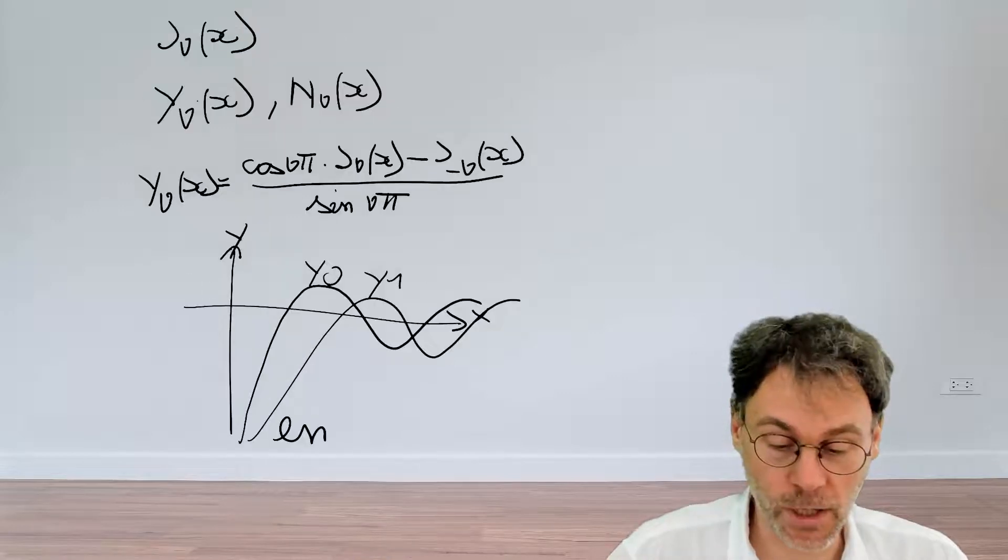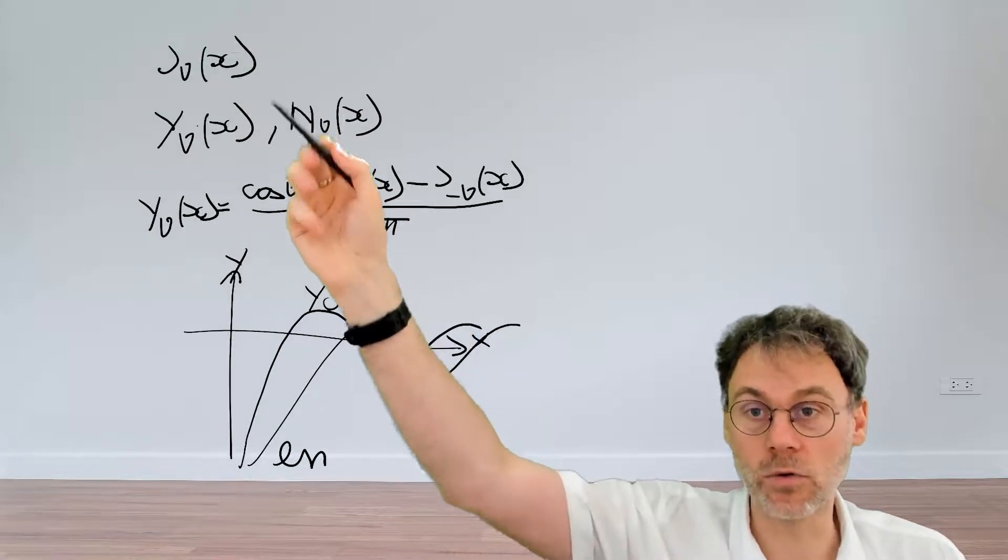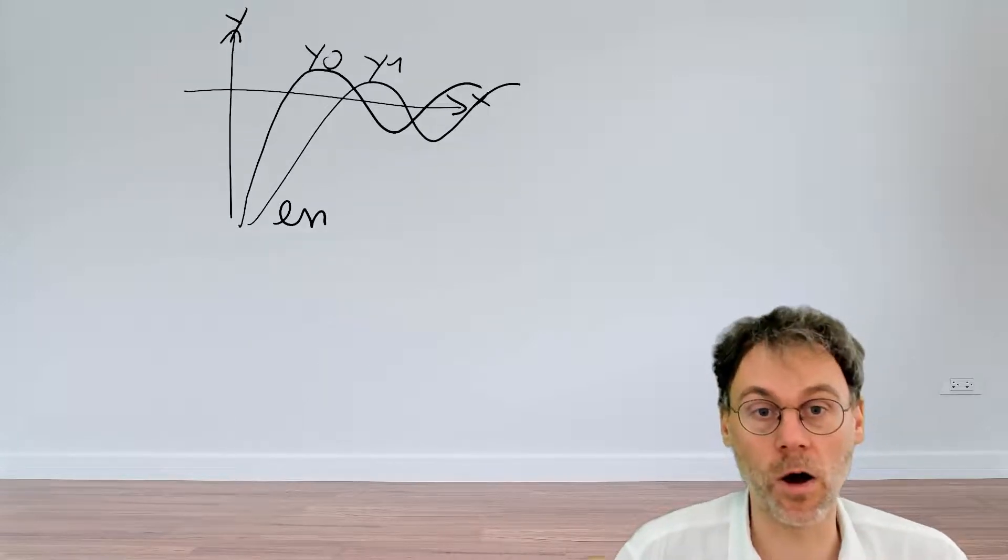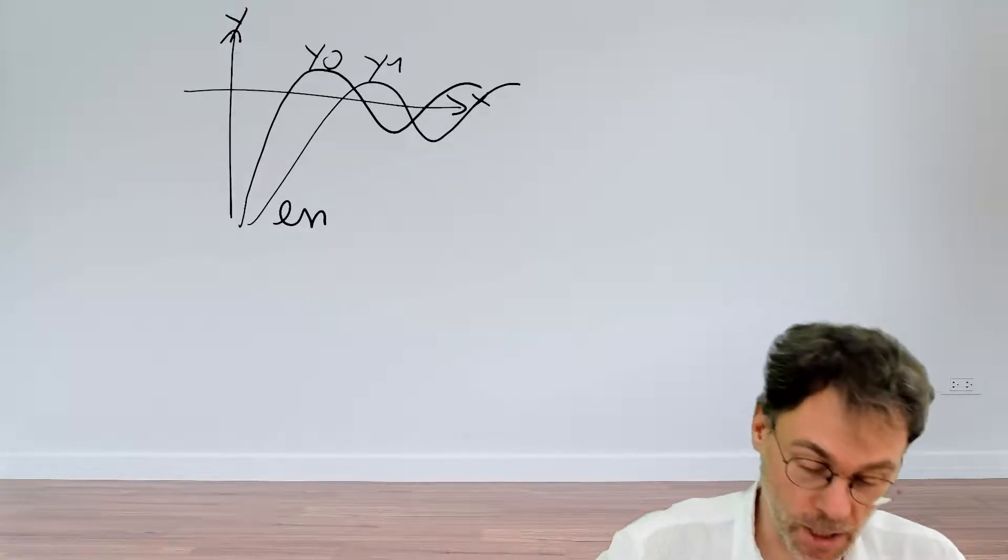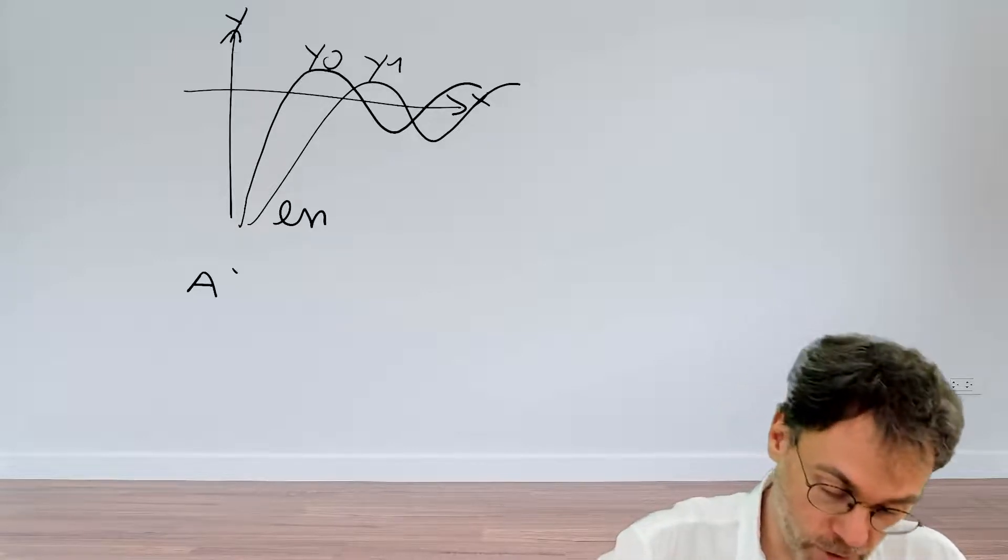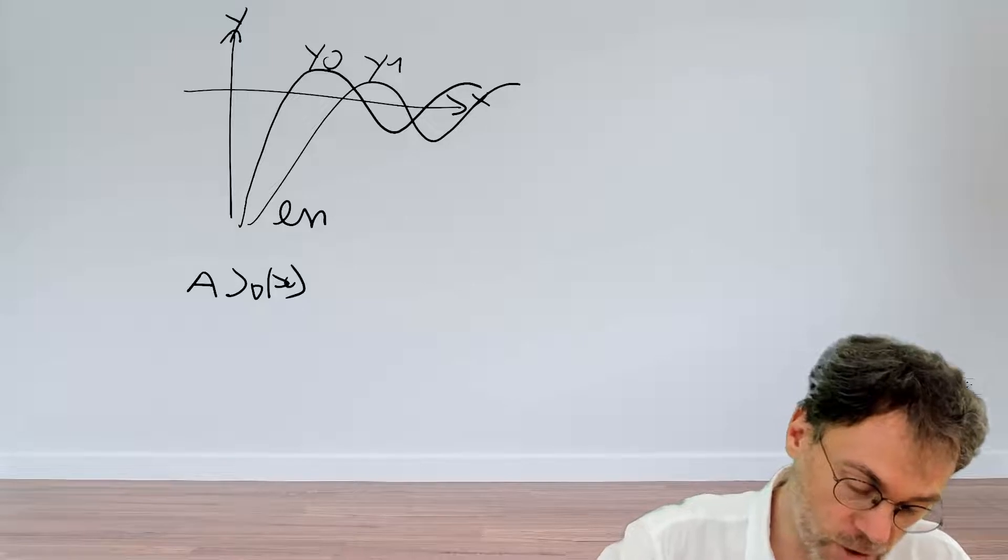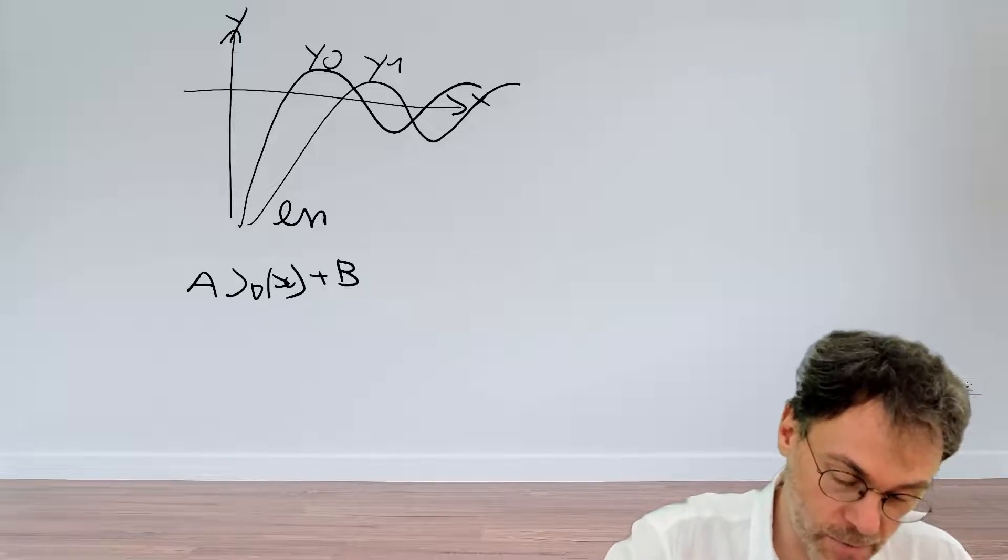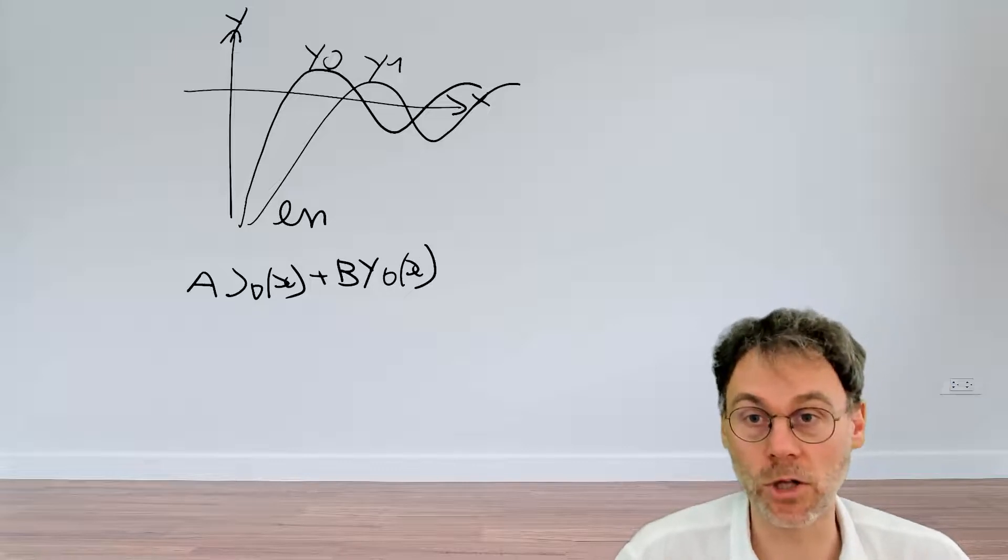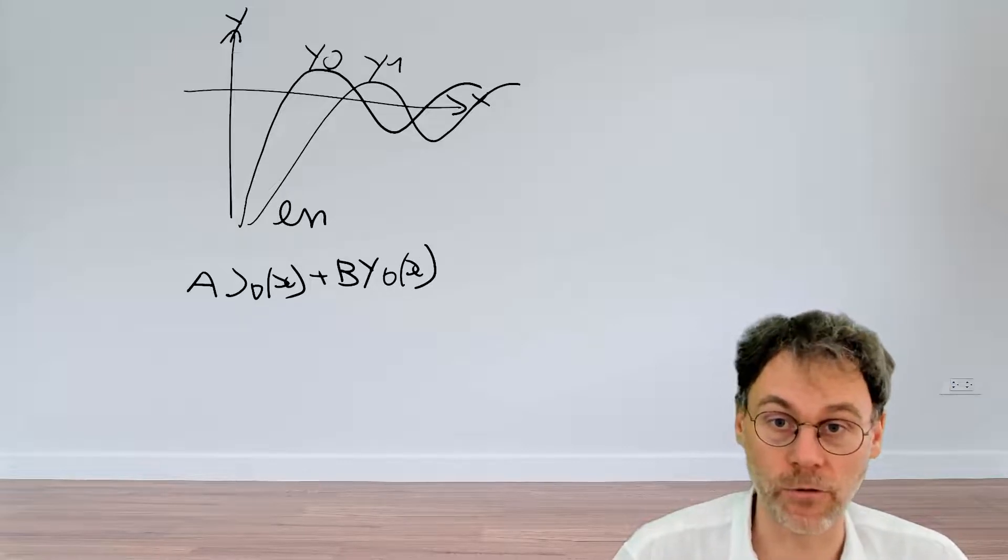Now if we then combine these two linearly independent solutions, that means that in general, the general solution of that differential equation can be written as the following linear combination as a multiple of the Bessel function of the first kind and then the Bessel function of the second kind. So this is the most general solution to the Bessel differential equation.